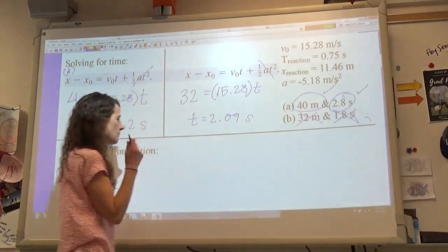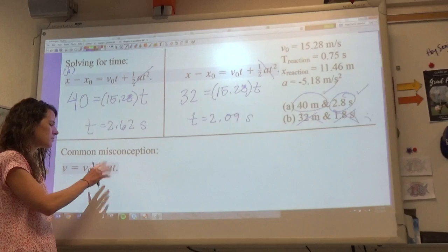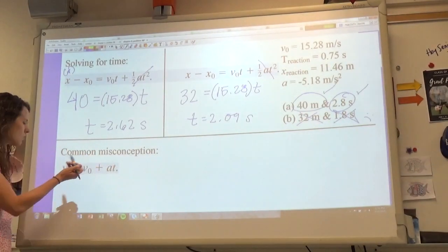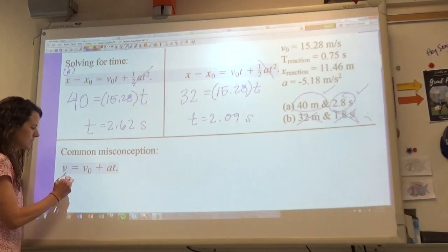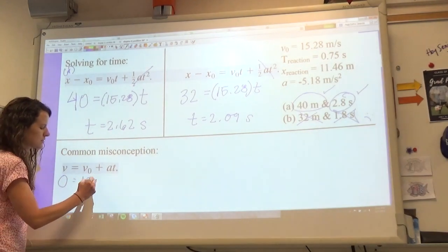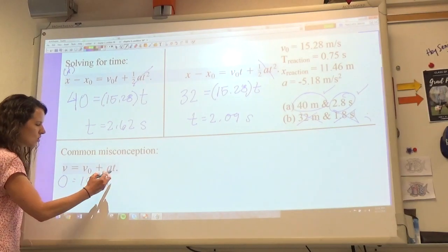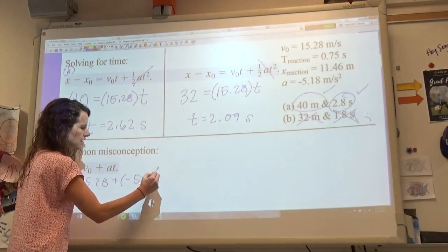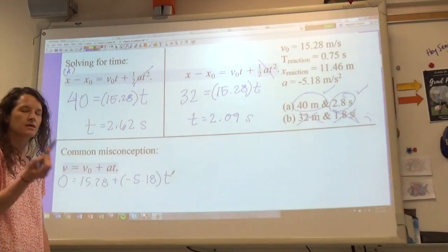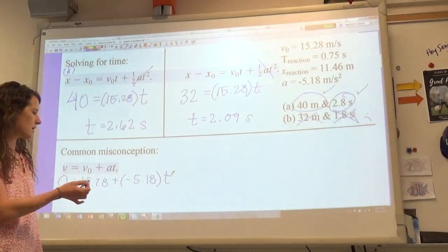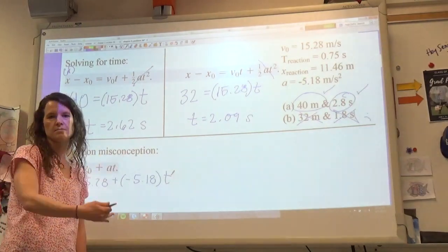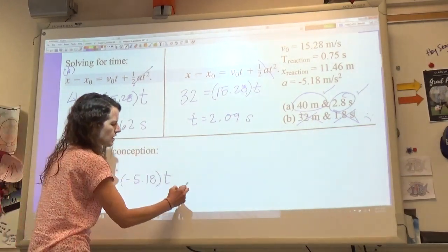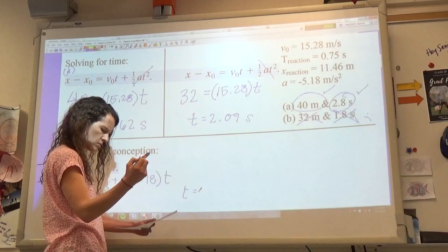There's a common misconception here though. Some people try to work this out using this equation, and their reasoning is they're saying, oh well, my final velocity is zero, my initial velocity is 15.28, and I know my acceleration, it's -5.18, and so I'll solve for time. And the logic here I think is that they're saying, oh well, if I'm decelerating I can figure out how much time that's going to take me, and then if it's too much time then I know that it's wrong. And I think that if you solve for this, you end up with your time equaling about almost three seconds, 2.94 seconds.